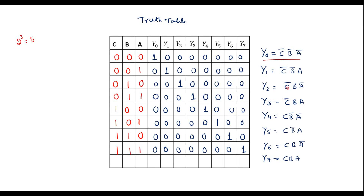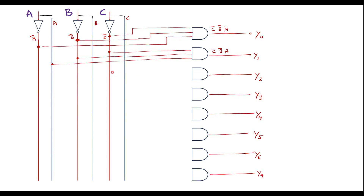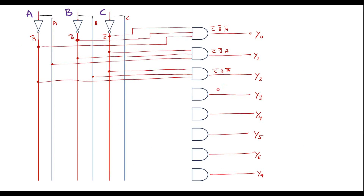For Y2 = C̅·B·Ā: connect C̅, the B line, and A̅. For Y3 = C̅·B·A: connect C̅ line, B input, and A input to the AND gate.